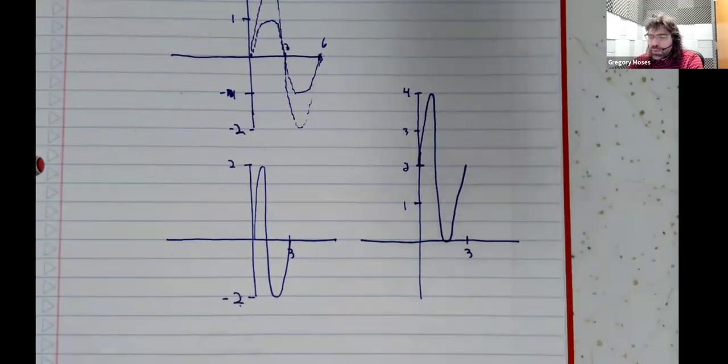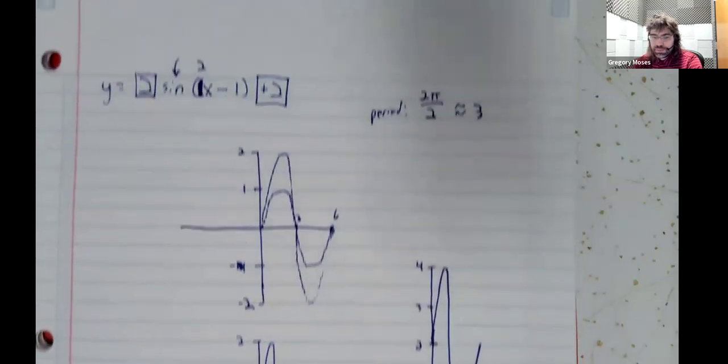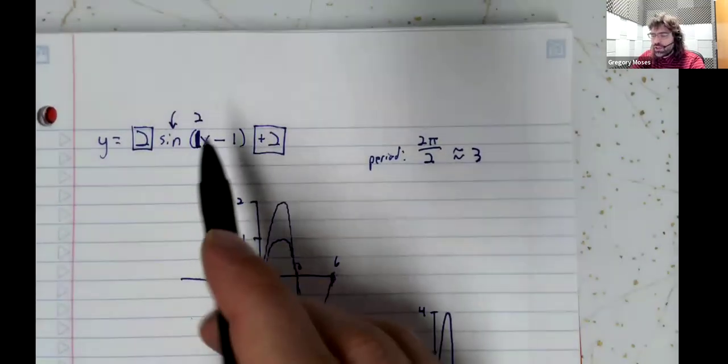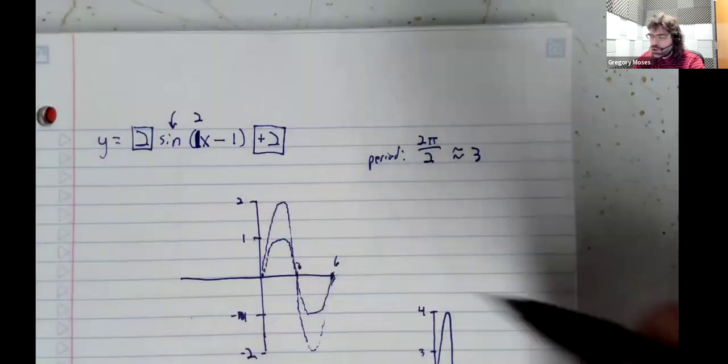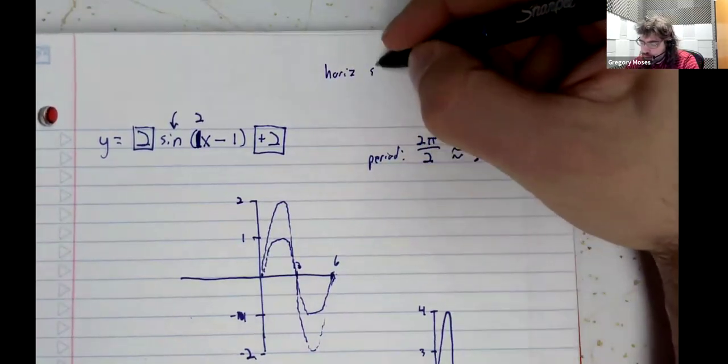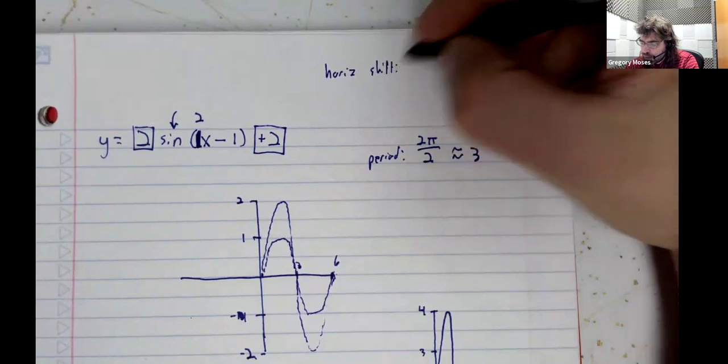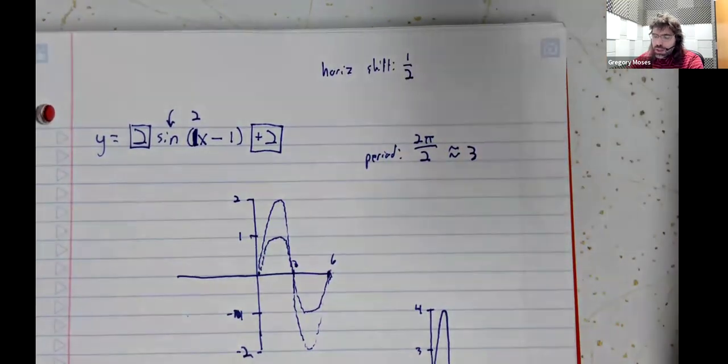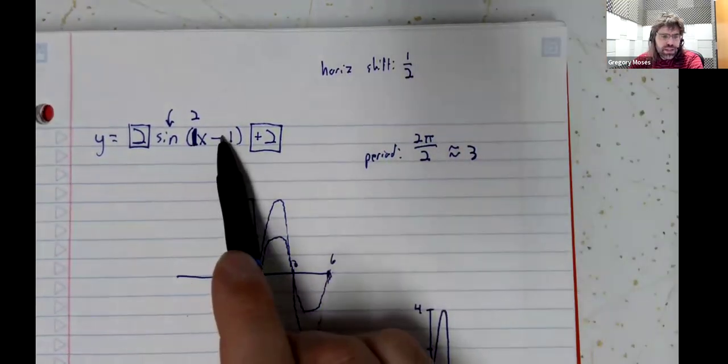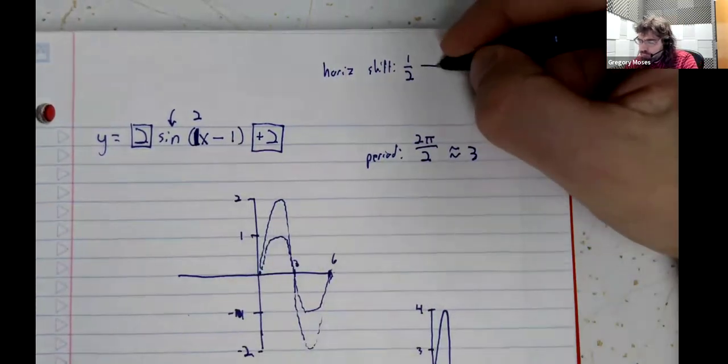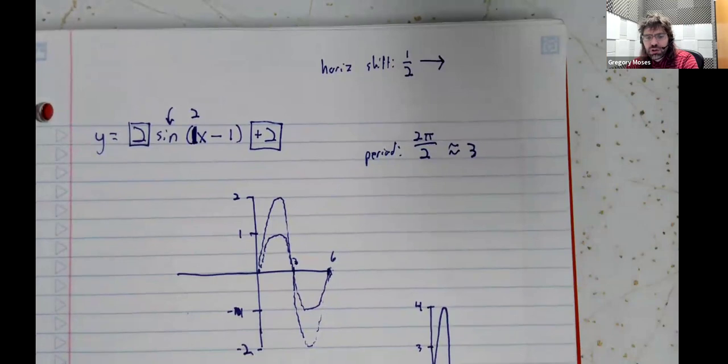What about horizontal shift? Well, the horizontal shift should be one over two. And we are subtracting a positive number, so it's going to the right.